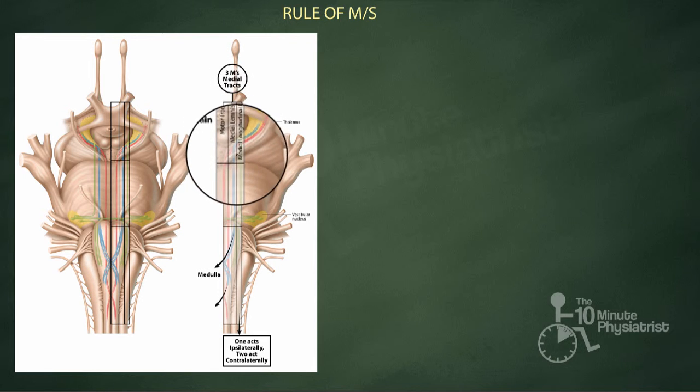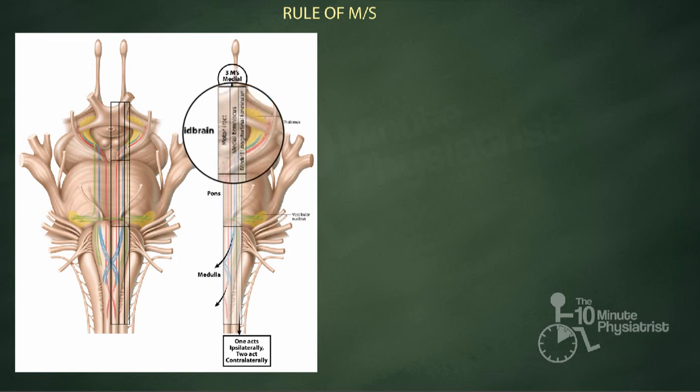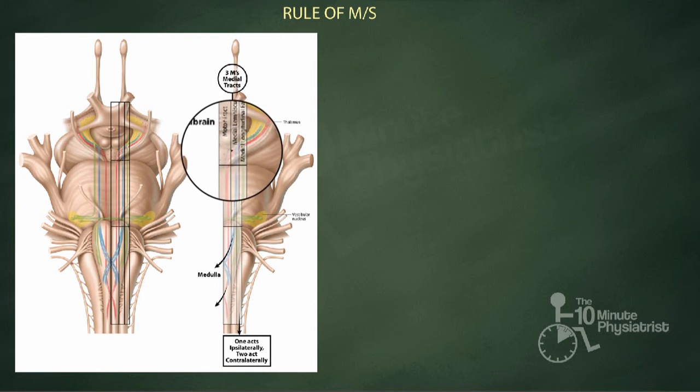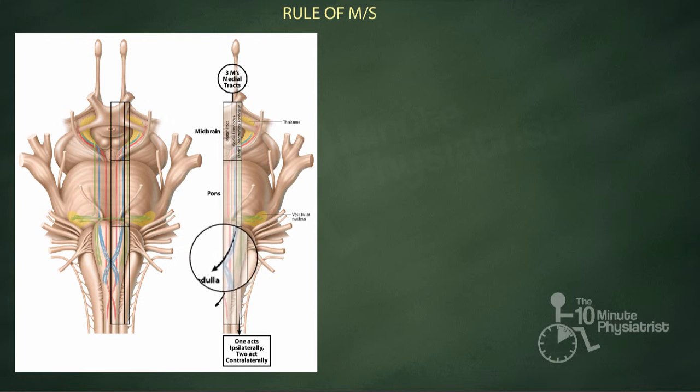The second tract is the medial lemniscus, responsible for vibratory sense and position sense, highlighted here in blue, which also comes down and decussates in the medulla.